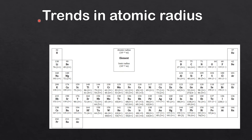On this periodic table we have the atomic radius at the top and the ionic radius at the bottom. Looking at group one, going down we have lithium which has an atomic radius of 130 × 10⁻¹² meters, and as you go down group one the atomic radius is increasing. Similarly in group two, starting with beryllium at 99 × 10⁻¹² meters, the atomic radius increases going down.